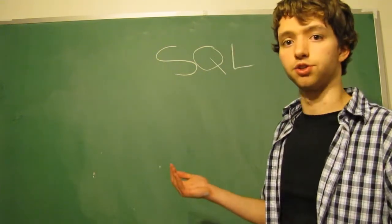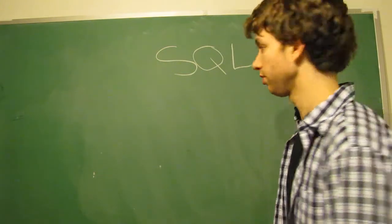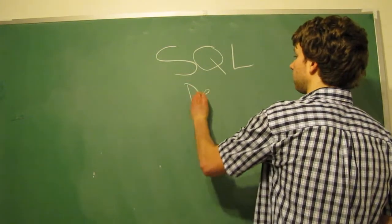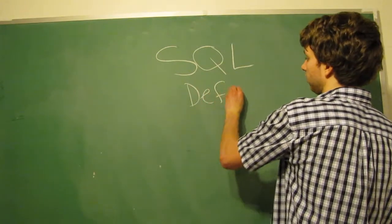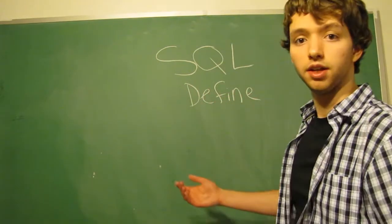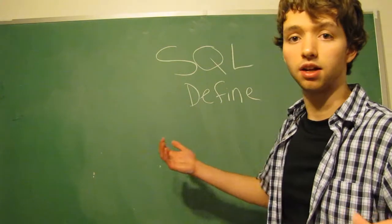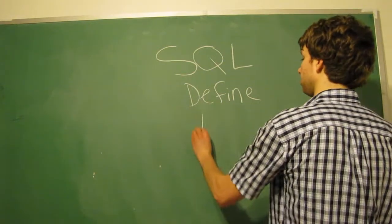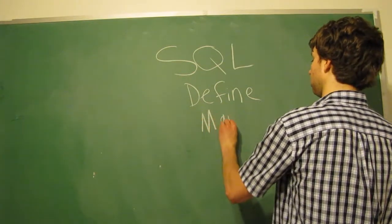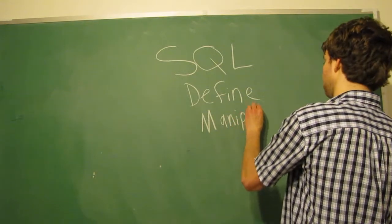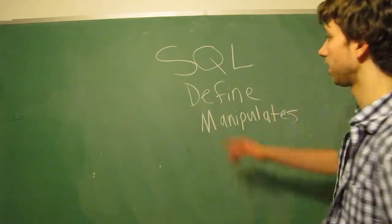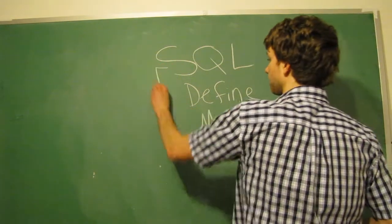SQL first is used to define the database structure. And then, it manipulates the data within. So basically, we can kind of think of SQL as two categories here.